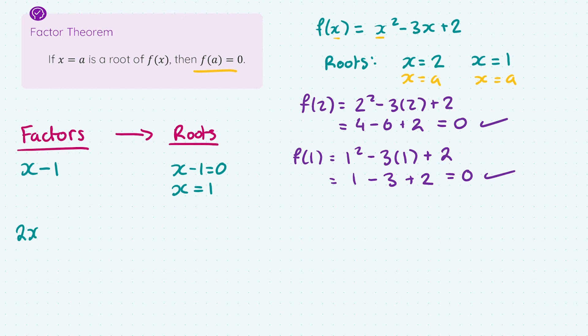What if we had another factor of 2x plus 3? Well, how do I find the root? I let the factor equal zero and solve for x. So I get 2x equals minus 3, and x equals minus 3 over 2.